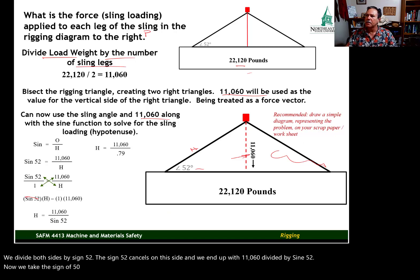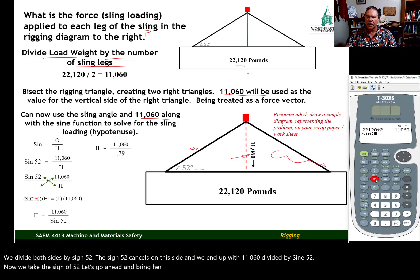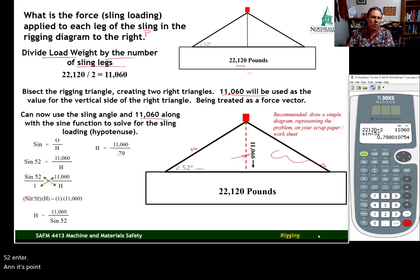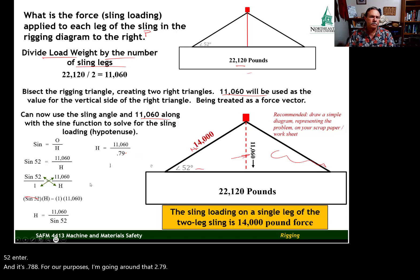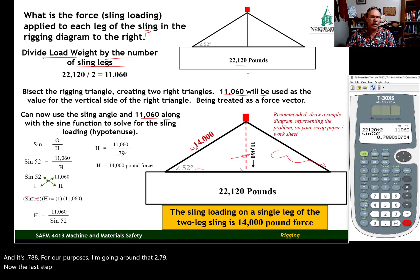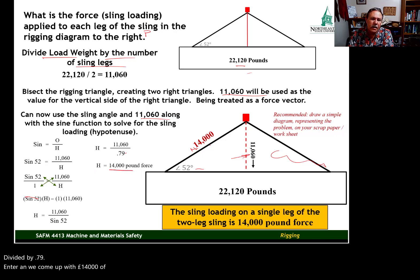Now, we take the sine of 52. Let's go ahead and bring our calculator back up. Just enter sine 52, enter. And it's 0.788. For our purposes, I'm going to round that to 0.79. Now, the last step is dividing the 11,060 by 0.79. Divided by 0.79, enter. And we come up with 14,000 pounds of sling tension in this leg of the sling.